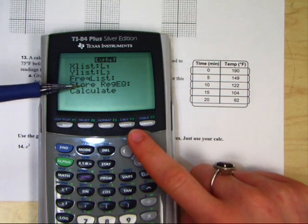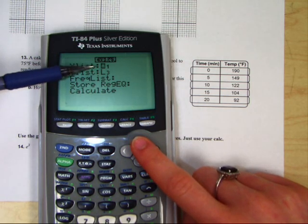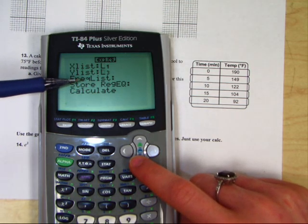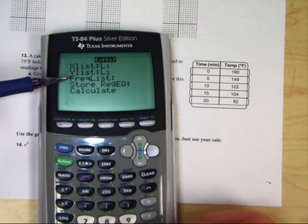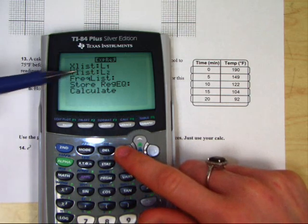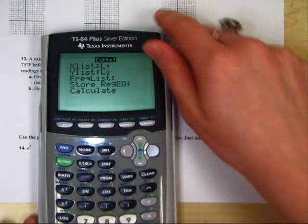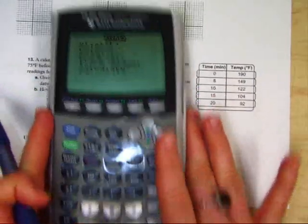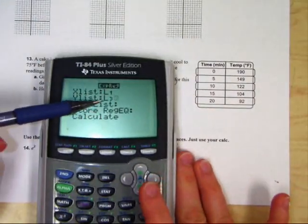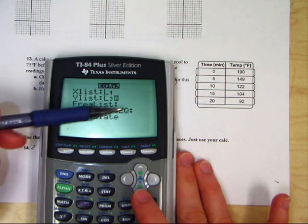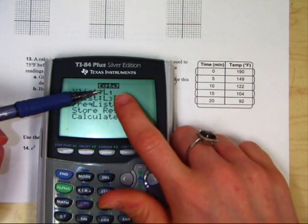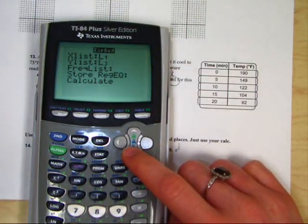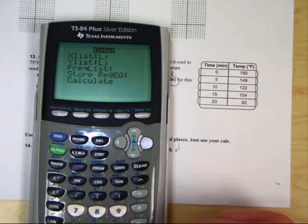In your calculator, if you have this kind of list, you want to make sure that you tell your calculator your x list should be L1. That should be automatic. Now some of you may have L2 here. If that's the case, we need to change your y list to L3 by hitting 2nd and 3. You will now notice that your y list is at L3. Now if your calculator is a little different, you might have to hit L1, L3. Once you have L1 and L3, go down to calculate and hit enter.